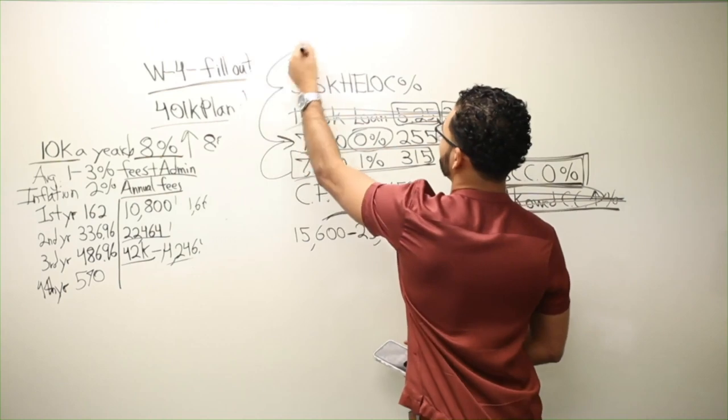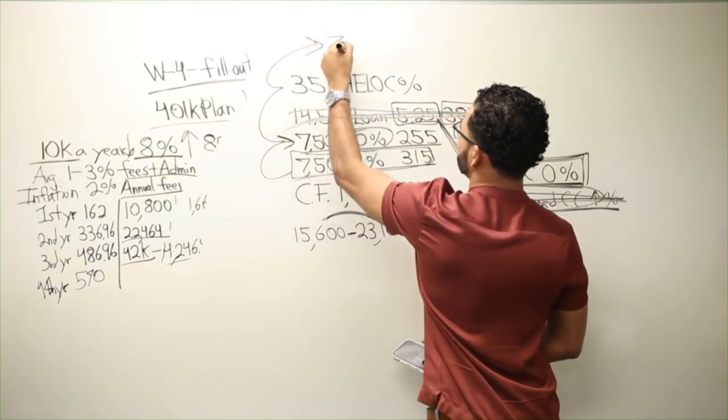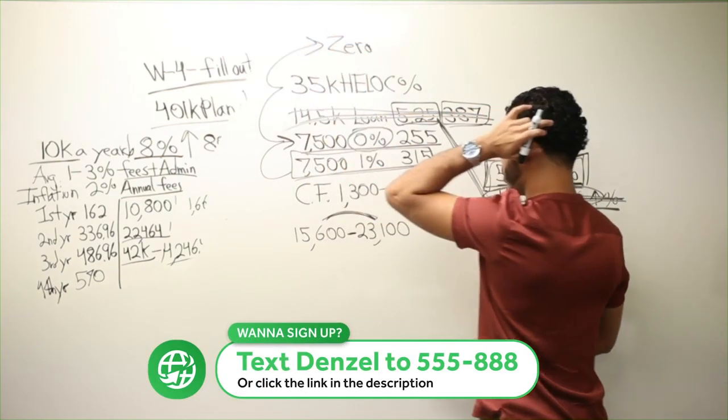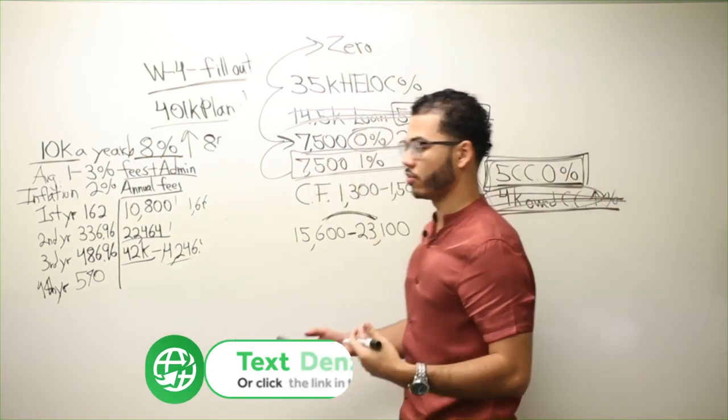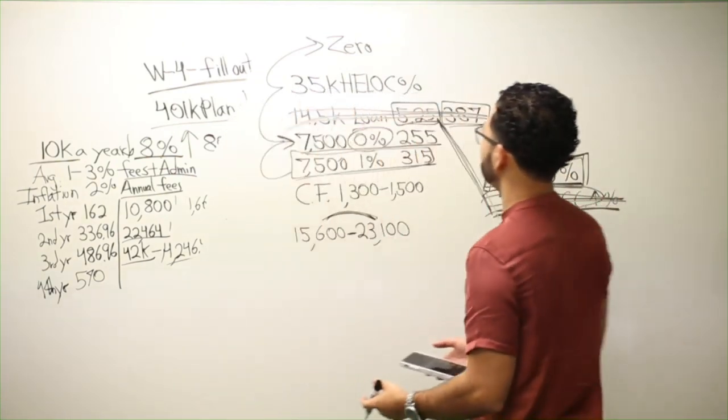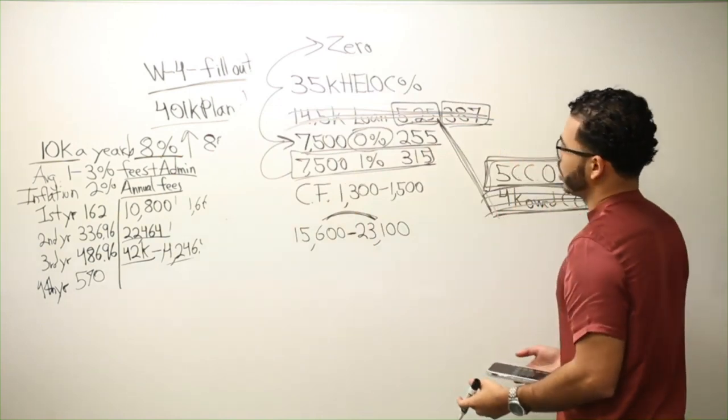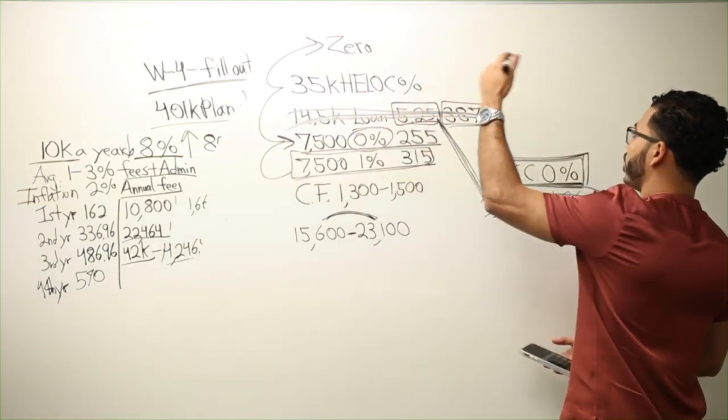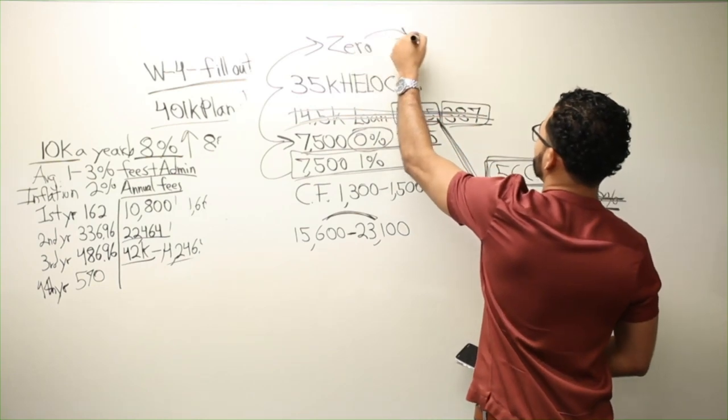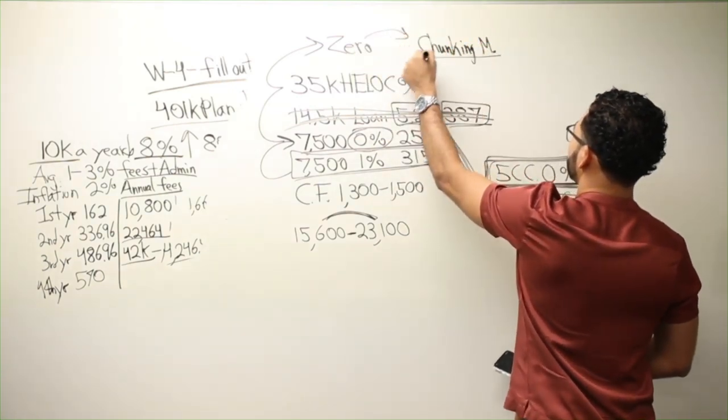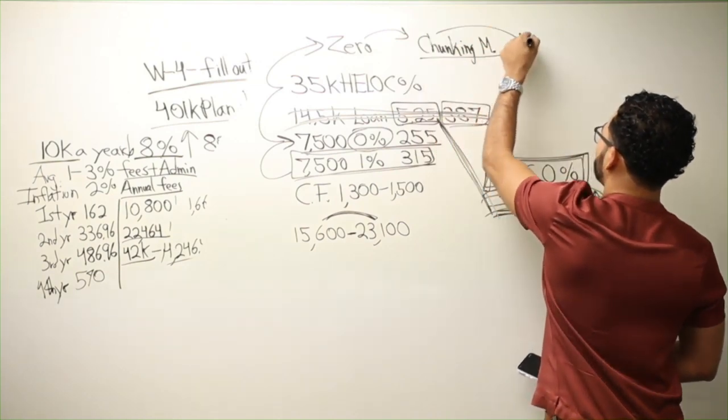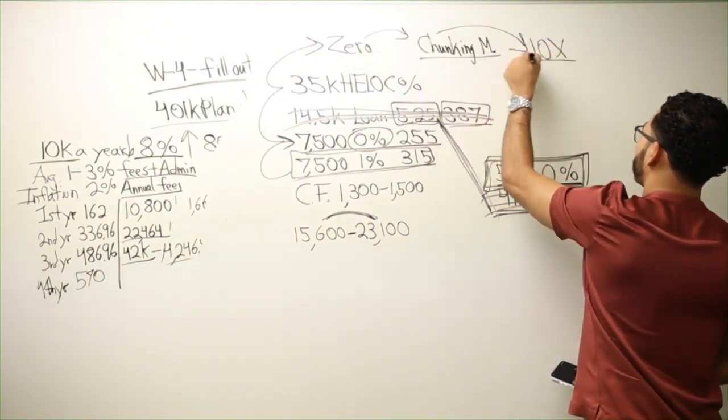Soon as my HELOC hits 0, after knocking out all those things, I'm assuming the mortgage would be left. If he has a mortgage on his property that he owes, he can go and start chunking on the mortgage, option one, 10x, option two.